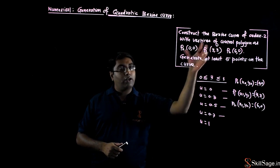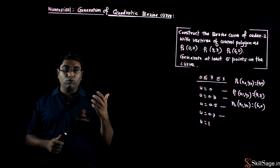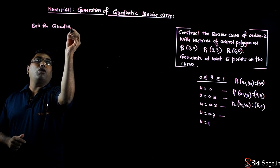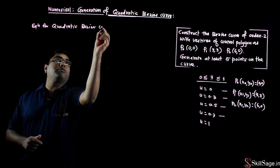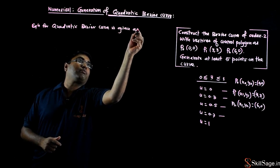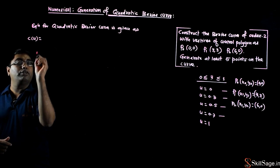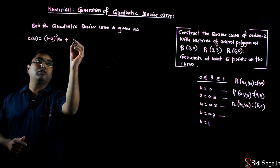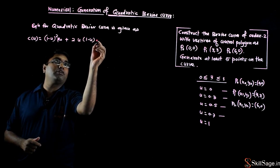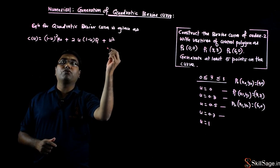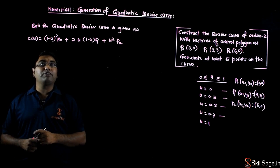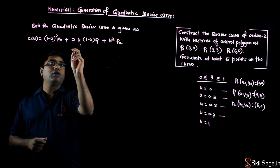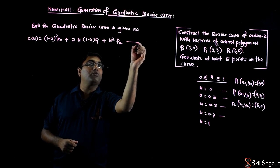Quadratic Bezier curve बनाने के लिए उसका equation use करना पड़ेगा। Equation for quadratic Bezier curve is: C(u) = (1−u)² × P0 + 2u(1−u) × P1 + u² × P2. इसे equation 1 कहेंगे। X coefficient calculate करने के लिए: x(u) = (1−u)² × x0 + 2u(1−u) × x1 + u² × x2 — this is equation 2. Y coefficient के लिए: y(u) = (1−u)² × y0 + 2u(1−u) × y1 + u² × y2 — this is equation 3.